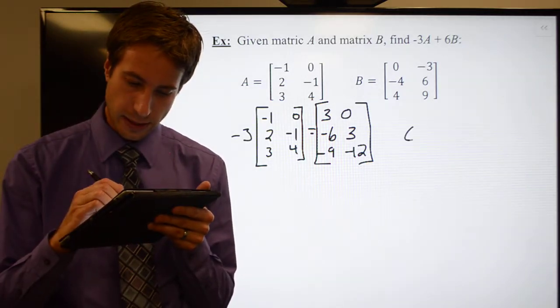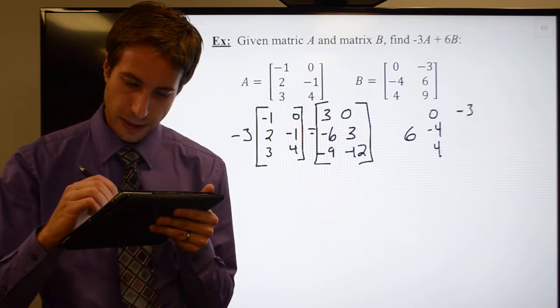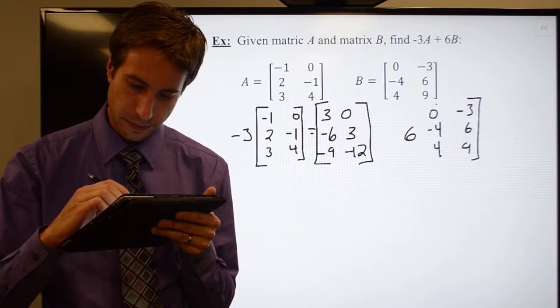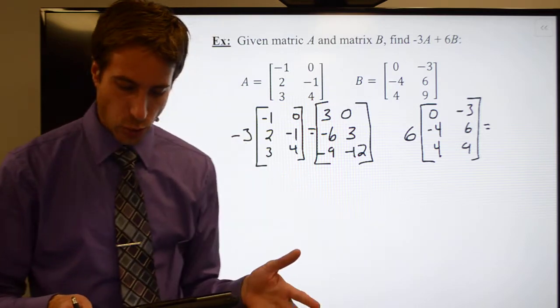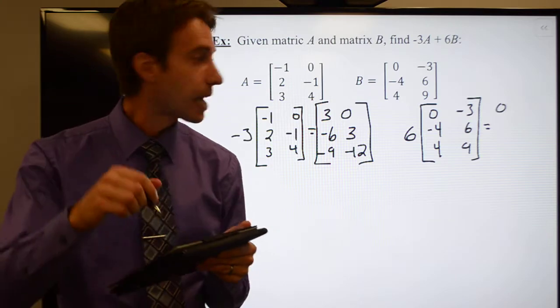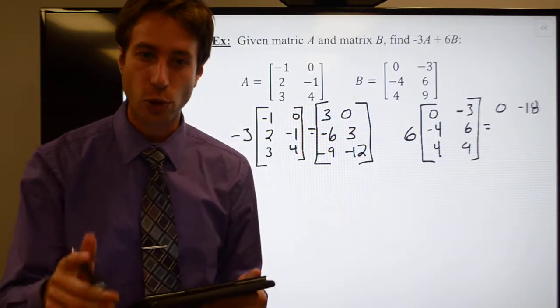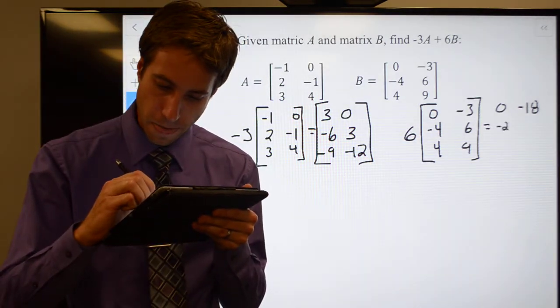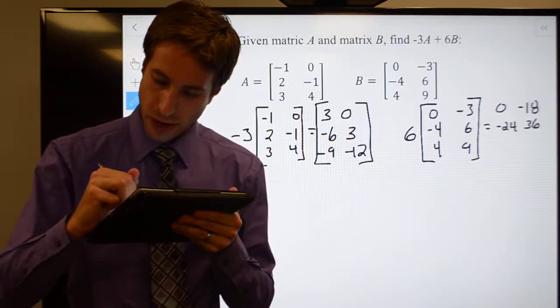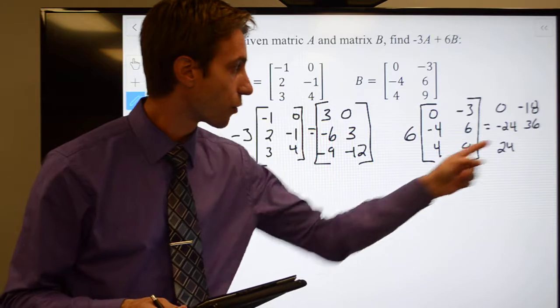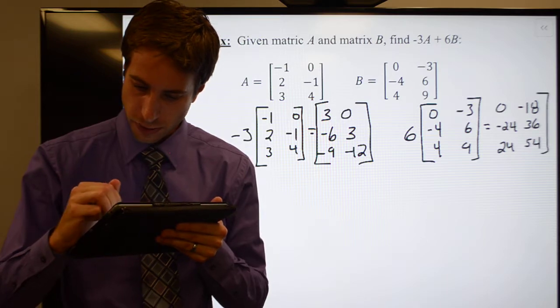Then I need to do 6 times matrix B: [0, -3; -4, 6; 4, 9]. Here's what we've got. 6 times 0, that's 0. 6 times -3, that's -18. 6 times -4 should be -24. 6 times 6 should be 36. 6 times 4, that's 24. And 6 times 9 should be 54. There's my new matrix. This is matrix B scaled by a factor of 6.